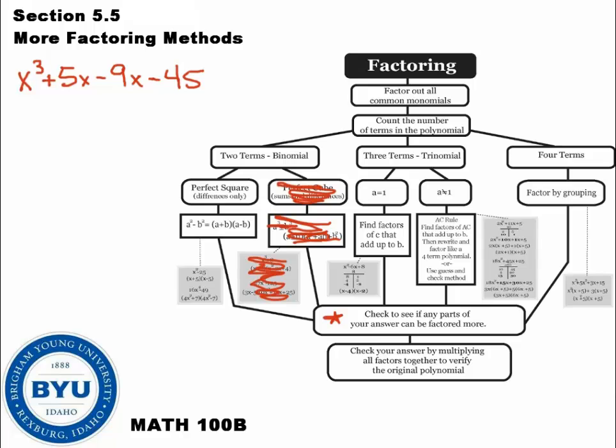Here's an example. I've got x cubed plus 5x squared minus 9x minus 45, and we want to factor this problem. I'm going to go through the entire map and ask myself, first of all, is there any common stuff to be factored out of this? No, I'm not seeing any greatest common factors in these.